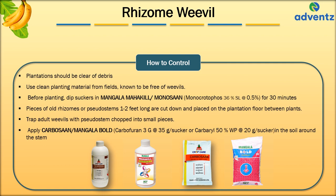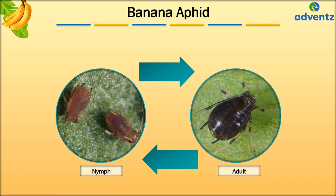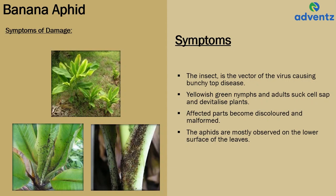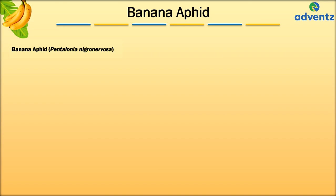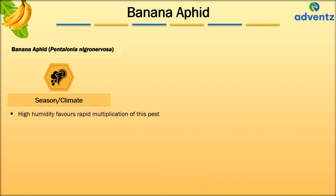The next pest is Banana Aphid, also known as Pentalonia nigronervosa. These visuals show the Banana Aphid at two different growth stages: nymph and adult. The symptoms of Banana Aphids are: the insect is the vector of the virus called Bunchy Top disease. Yellowish-green nymphs and adults suck cell sap and devitalize plants. Affected parts become discolored and malformed. The aphids are mostly observed on the lower surface of the leaves. High humidity favours rapid multiplication of this pest.